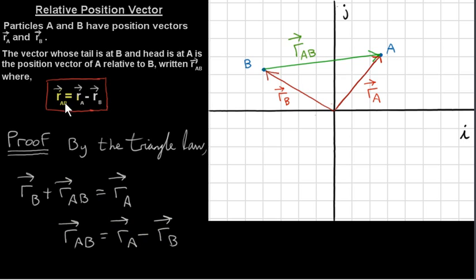We need to be clear what the notation means. In the subscript of this vector, the first letter is A, so we're looking at the position of A relative to B — the position of the first letter in the subscript relative to the second letter. It's easy to memorize: A appears first in the subscript, so A appears first on the right-hand side; B appears second, so B appears second on the right-hand side.